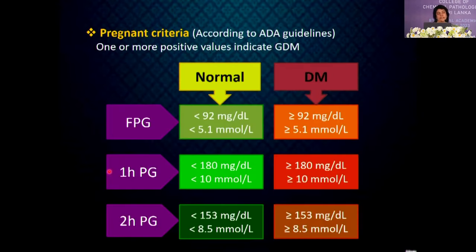For gestational diabetes mellitus, different cutoff values apply: fasting 92 mg/dL, 1-hour 180 mg/dL, and 2-hour 153 mg/dL. To diagnose gestational diabetes, one or more values must be at or above the cutoff.